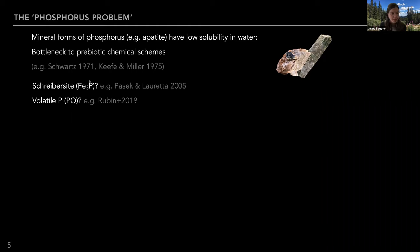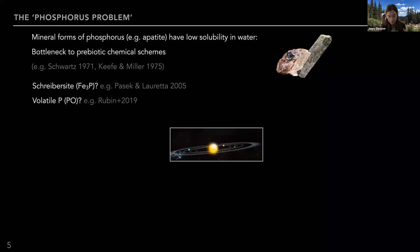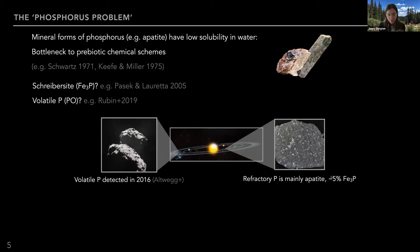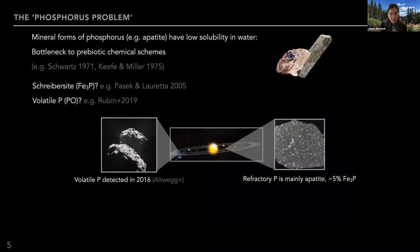One pathway is using metal phases of phosphorus, like schreibersite. Another option is delivering a more volatile form of phosphorus, like PO. From primitive relics in our own solar system — like comets and meteorites — we have some constraints on these potential solutions to the phosphorus problem. In primitive meteorites, refractory phosphorus carriers are mainly stored as apatite, with a smaller percentage as schreibersite. In solar system comets, volatile phosphorus has been detected with reasonably high abundance, suggesting that delivery of cometary ices could be a way of delivering volatile phosphorus for subsequent prebiotic chemistry.